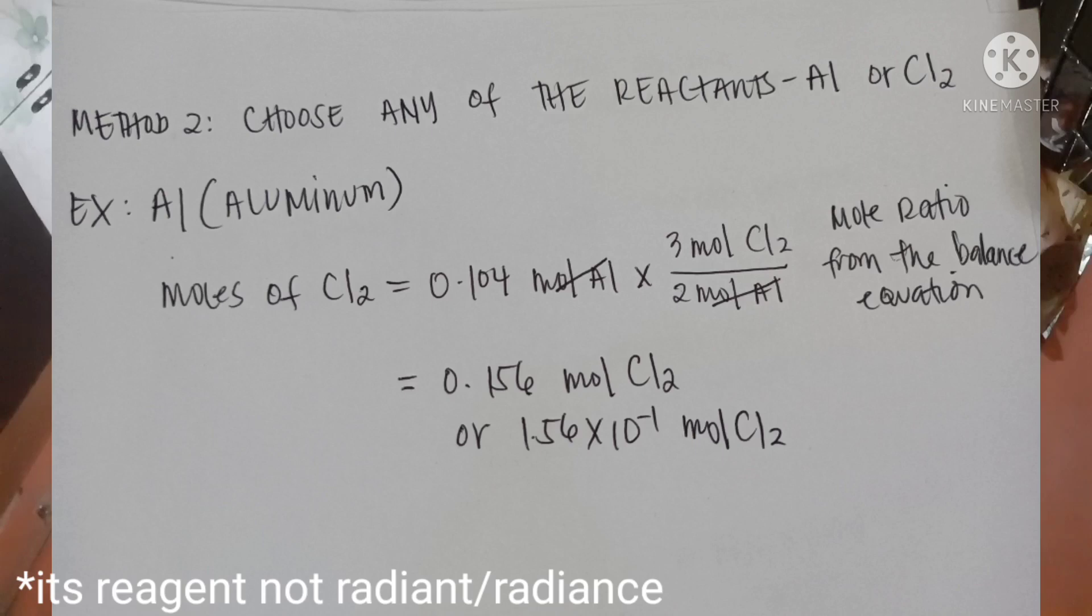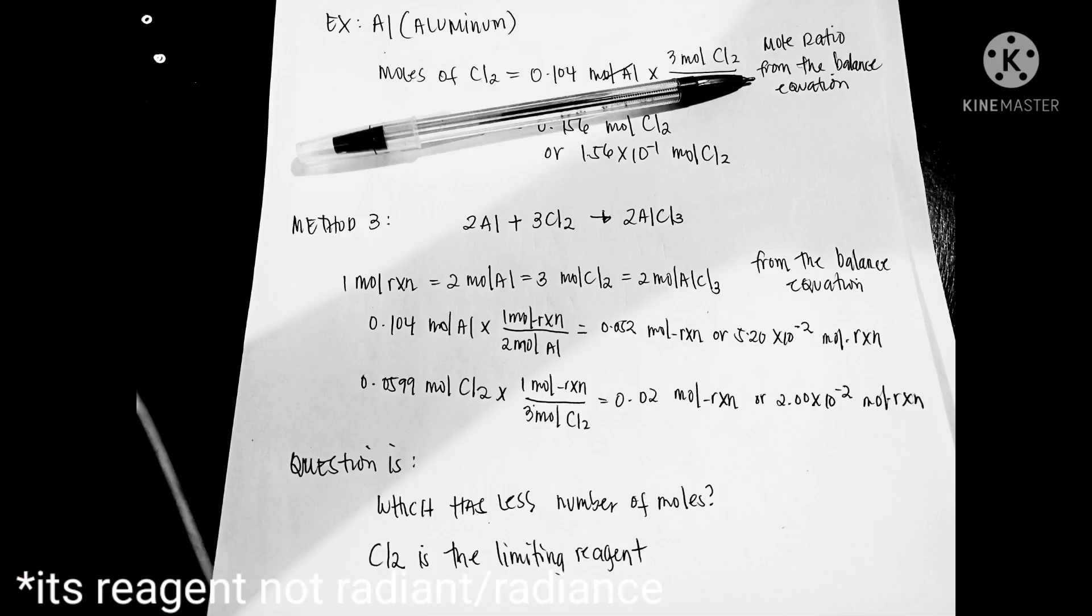So computation natin ang kailangan natin ay Cl2 is equal 0.156 of mole Cl2 kung aluminum ang ating limiting reagent. Pero sa example natin, ang number moles of Cl2 is 0.0599 moles lang, which is less than 0.156 yung na-compute natin which means mauubos ang chlorine bago pa mag-fully react sa aluminum. That's why the limiting reagent is the chlorine or Cl2.